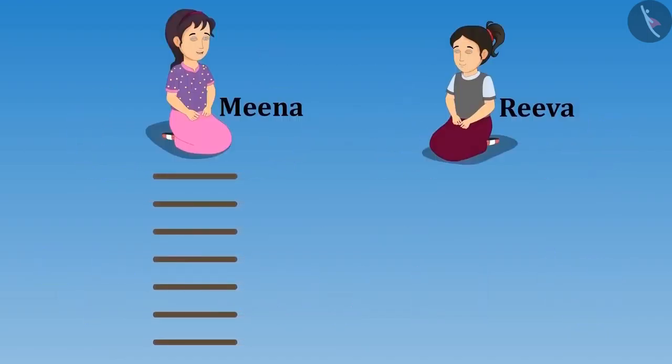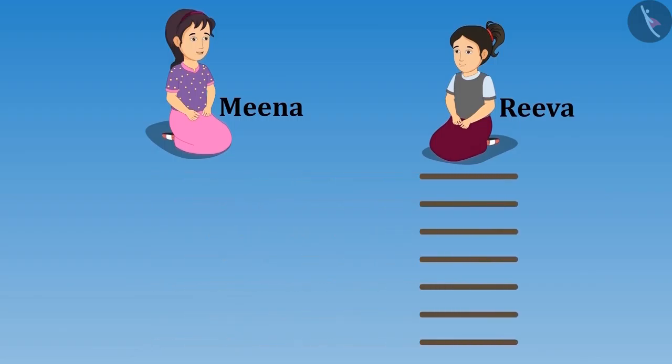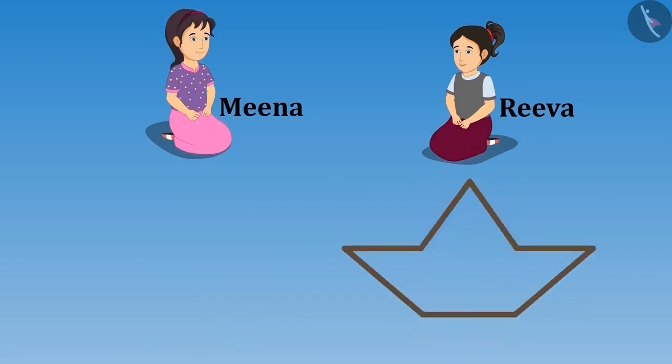Come on Riva, now I will give you seven sticks. Can you make a closed shape with them? Yes sister, look what I have made. Very well done Riva. Did you observe that there are many angles in this shape? Can you identify the angles in this shape?